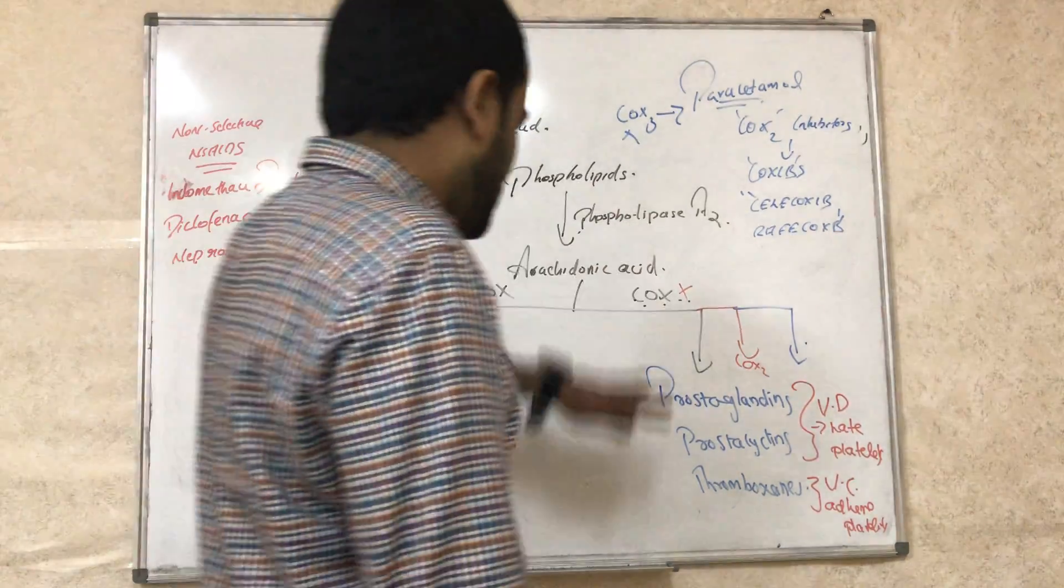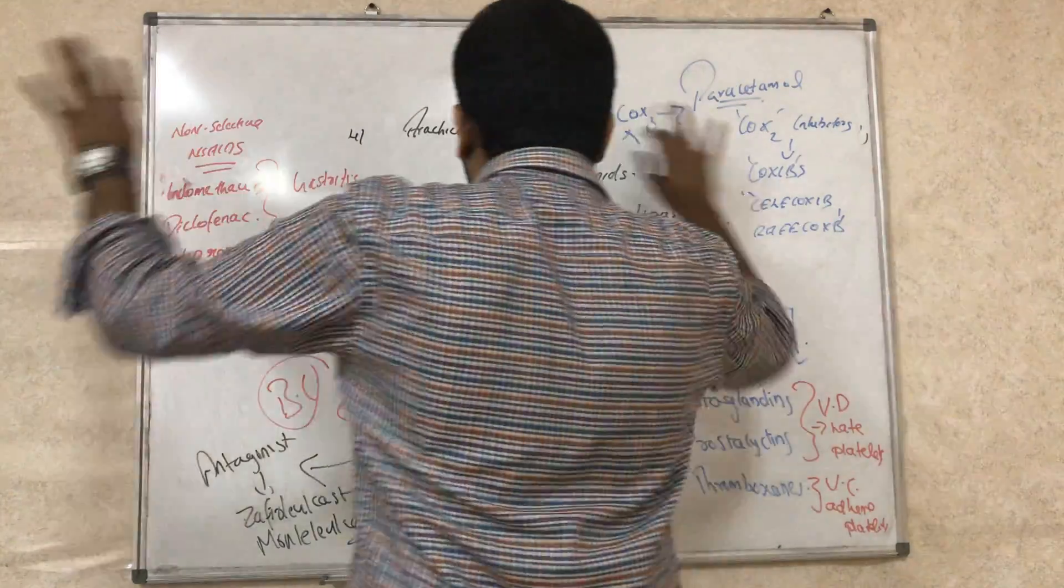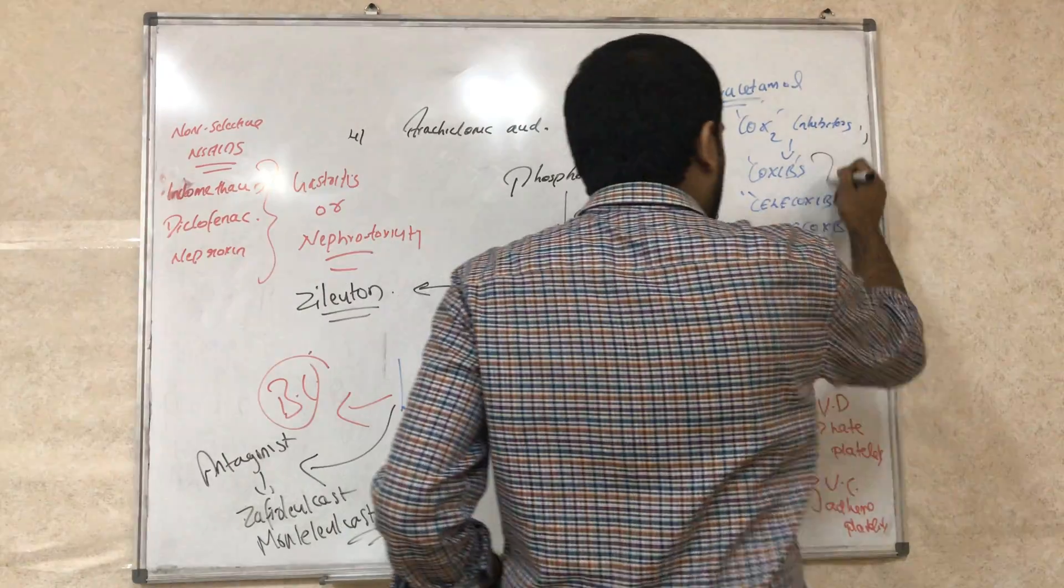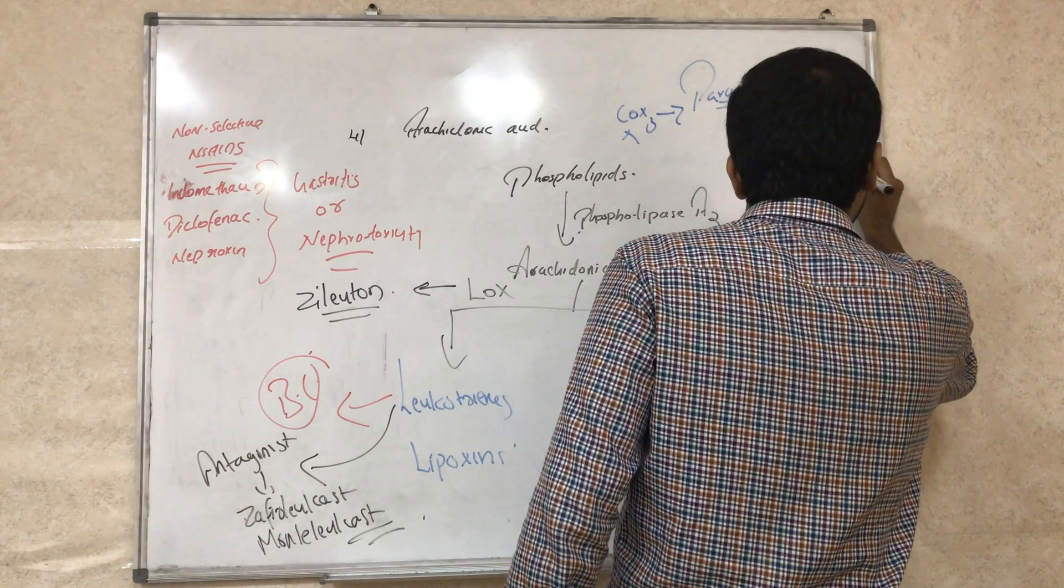So these are the mediators of inflammation I just added. I forgot to mention, the coxibs will also cause cardiotoxicity.